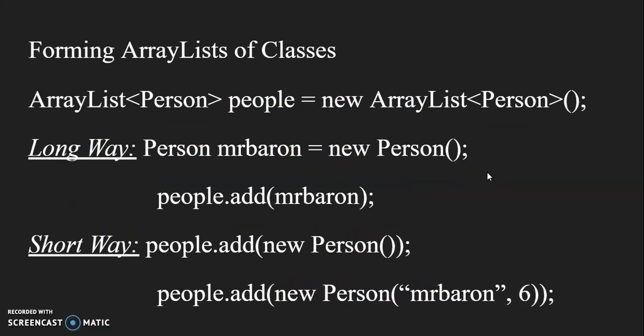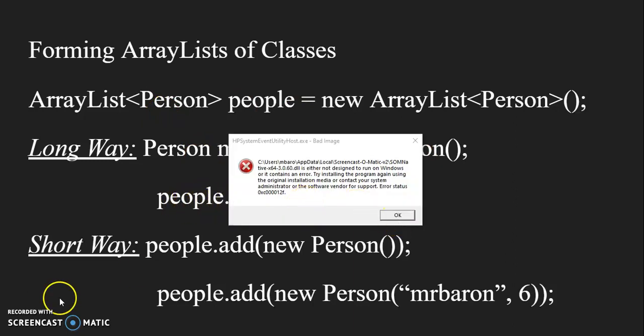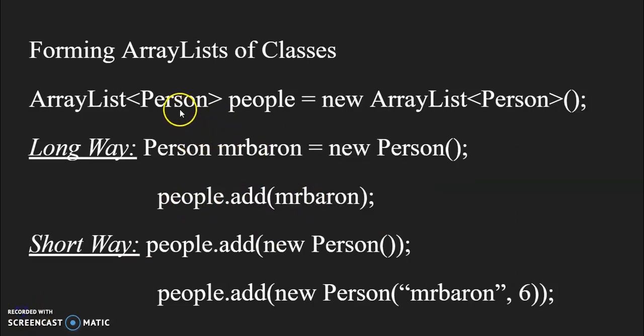So when we're adding things to ArrayList, we have two ways to do it. We have what we call the long way and the short way. I'm going to call them that way. I went over this briefly in class before, but I do think it's something that's important to know. Say we define ArrayList of persons named people equals a new ArrayList of persons. We have a long way of adding something into that ArrayList. We can say person Mr. Barron equals new person, created a new person object, and then we can say people the ArrayList dot add Mr. Barron. So that way I've added an object of class to person from an object that already exists.